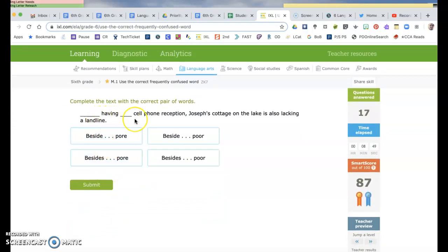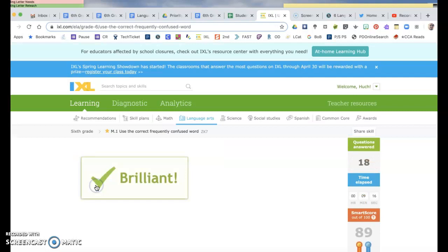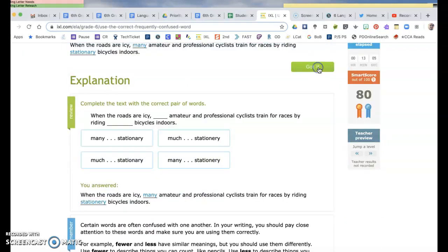Blank having blank cell phone reception, Joseph's cottage on the lake is also lacking a landline. Beside or besides having. So I'm going to say besides. This poor is pore like in your face, and this poor means not having a lot of money. So I'm going to go with that one, or not having enough. So that would be how that would work there.